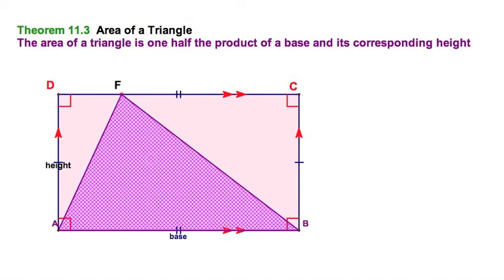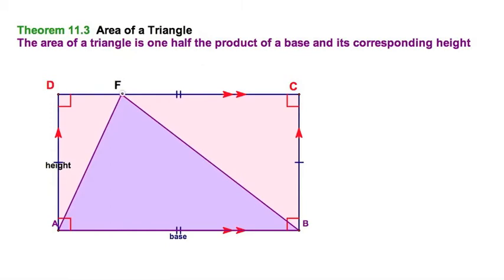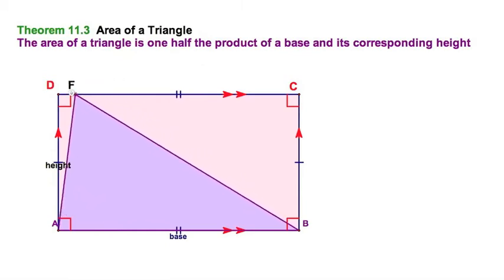which is superimposed on this rectangle where it shares a base. Now, clearly, if F were to coincide with D, say that were just one point,